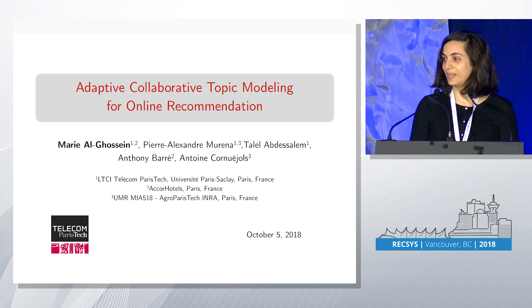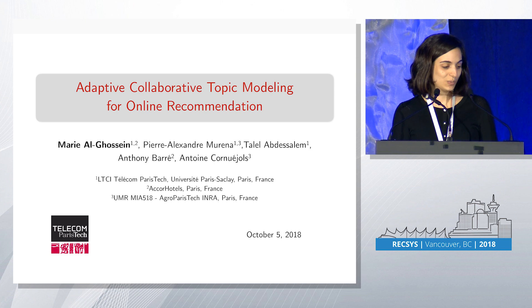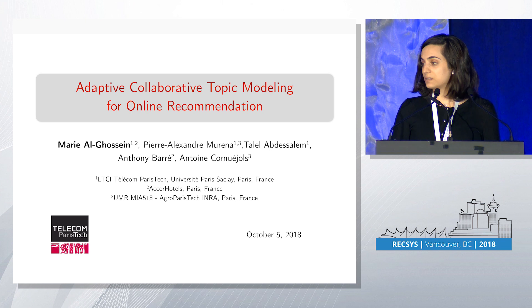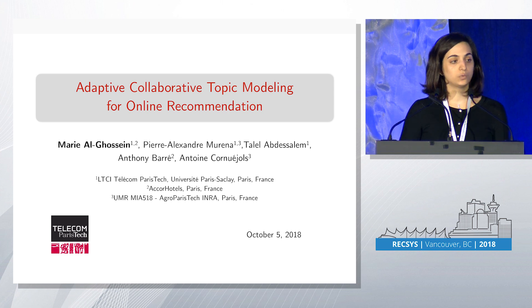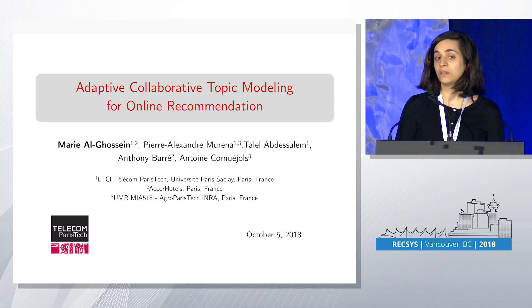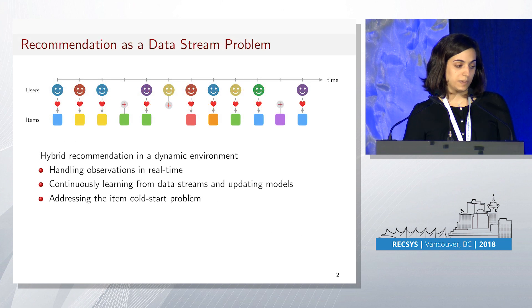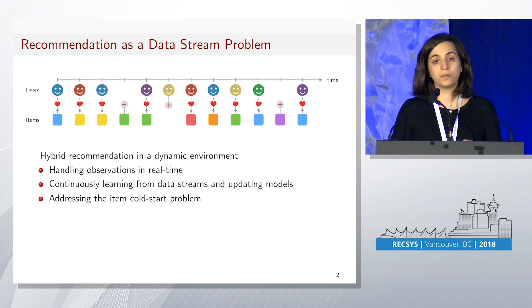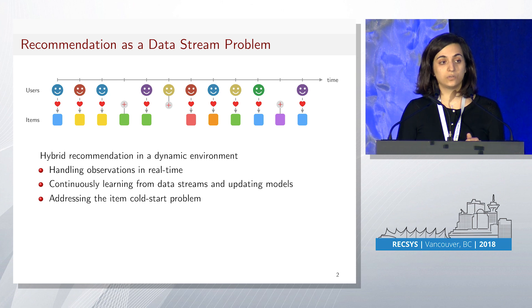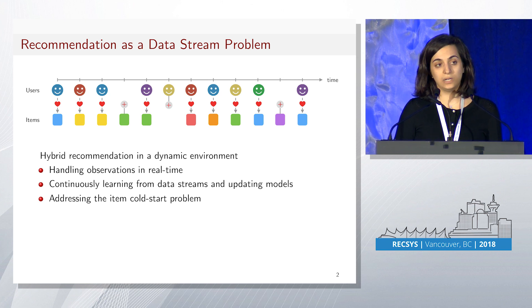The nice thing about being the last one to present is that I can skip all the introductions about recommendation and just head to the problem we're addressing in this paper. Most recommender systems being proposed today are meant to work in batch, where we're learning a recommendation model based on a static dataset and then updating the model periodically. In this paper, we're addressing the recommendation problem as a data stream problem, where we assume that user interactions are being received in real time, and also items are being made available in real time.